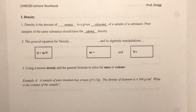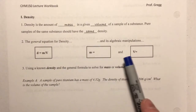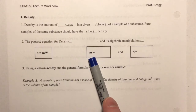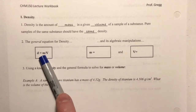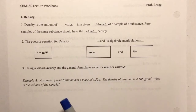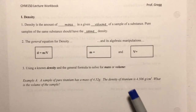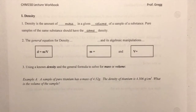I'd like you to pause the video and rearrange the density equation to solve for mass and to solve for volume. Note that lowercase m here is the abbreviation for mass, not for meters. So if d = m/v, rearrange it algebraically first to solve for mass, then to solve for volume. This is a fairly trivial algebraic manipulation — algebra is a prerequisite for this course — but I want to point out something for those who may take a mental shortcut and get the wrong answer.